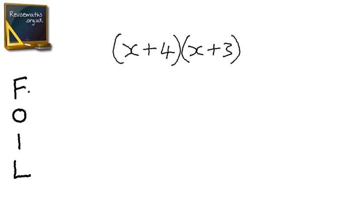So FOIL stands for first, outside, inside, and last. And that's the order we're going to multiply our terms.